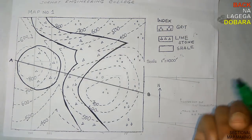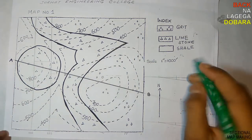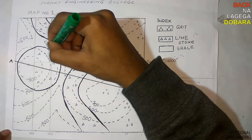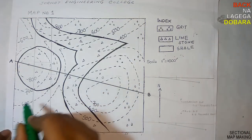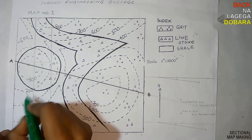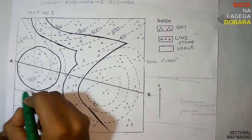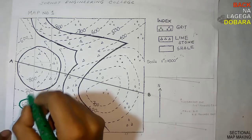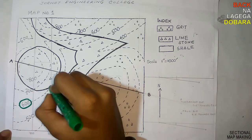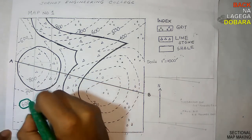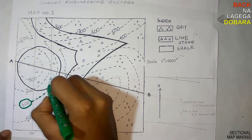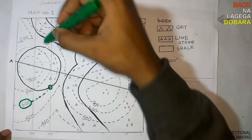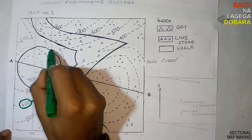Let's take any plane. Check for consecutive contour lines which enter and exit the bedding plane. Like here, 600 cuts in at this point and exits here.